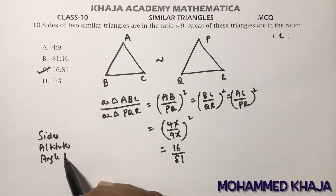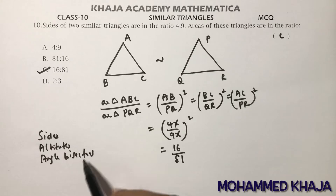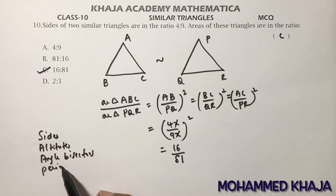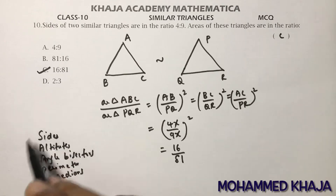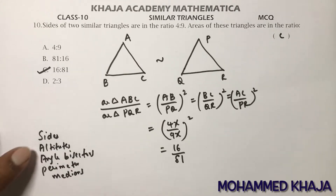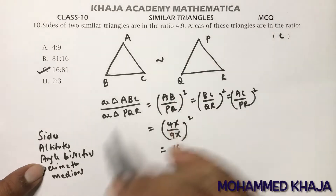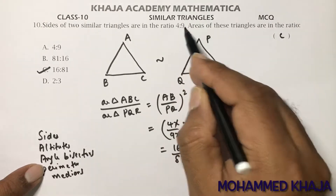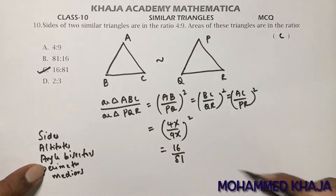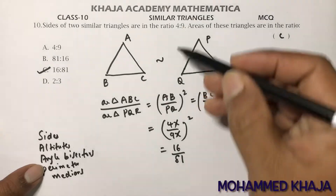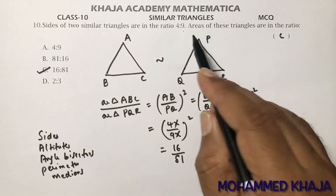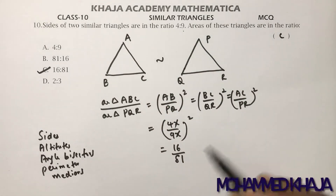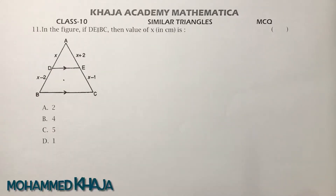Whenever sides, altitudes, angle bisectors, perimeter, and medians are given, all these will be in the same ratio. If any one of these is given and area is asked, just square those values. Here sides are 4:9, so 4²:9² = 16:81. If area is given and side is asked, apply square root.